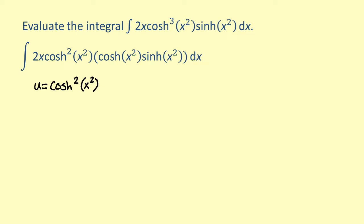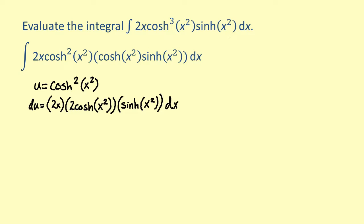Differentiating, we get du is equal to 2x times 2 times the hyperbolic cosine of x squared times the hyperbolic sine of x squared dx. Simplifying, we get 4x times the hyperbolic cosine of x squared times the hyperbolic sine of x squared dx.